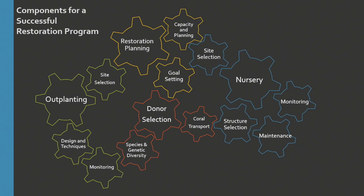What we've come up with in this guide is bringing together all the different components of restoration. I present these as gears that work together, because without one of them, your restoration program will not be as successful or as efficient as it could be. These are all the major topics we go through, starting with restoration planning, each supported through research or other existing guides. For this section, I'll focus on outplanting and site selection, and the design and techniques we've covered.